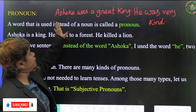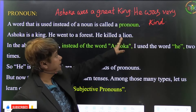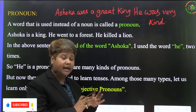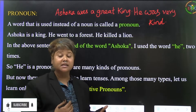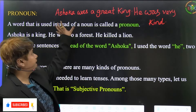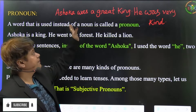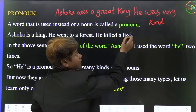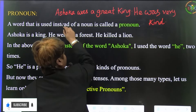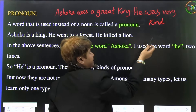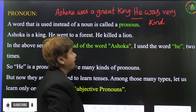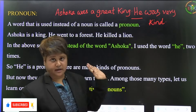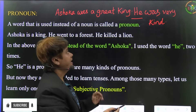If we write an essay saying 'Ashoka was a great king, Ashoka was very kind', it sounds bad. If we repeat the subject's name again and again in every sentence, it doesn't sound good. So instead we say: 'Ashoka was a great king, he was very kind.' Here, 'he' is used in place of Ashoka.